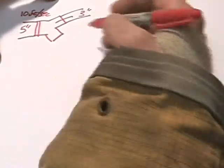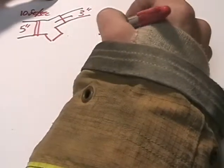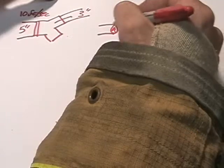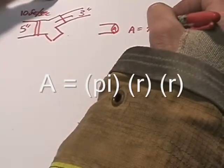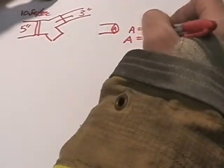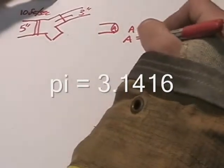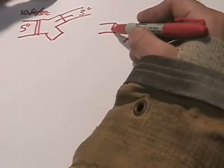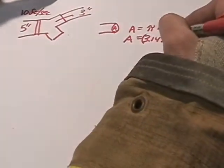First thing we need to do is solve for the area. We know that if we take a pipe and cut it in half, this is the area, the end of it. The area of a circle is equal to pi r squared. Now pi is always 3.14. So we're going to multiply 3.14 times the radius, which is half the diameter. For the 5-inch hose, half the diameter is 2.5.